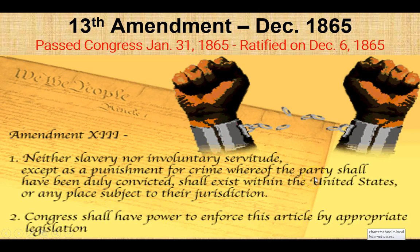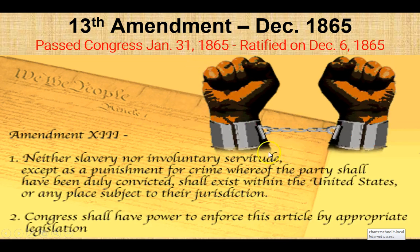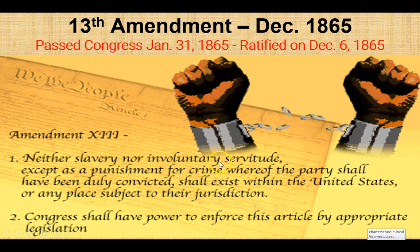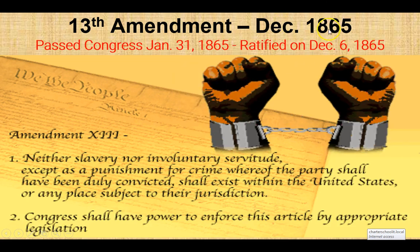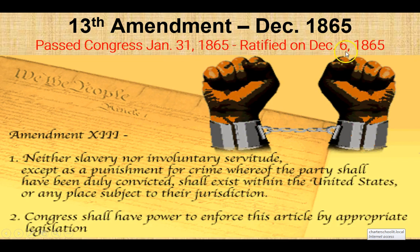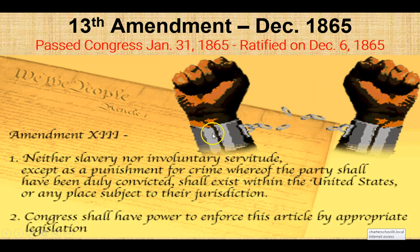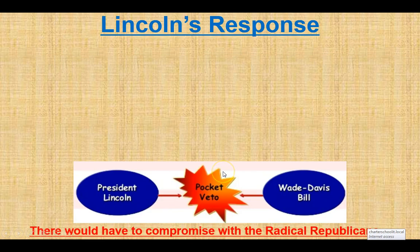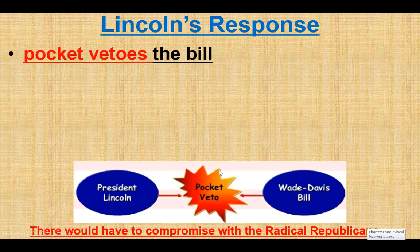In 1865, the 13th Amendment passed Congress on January 31st, 1865, and was ratified December 6th, 1865: neither slavery nor involuntary servitude, except as a punishment for a crime. If you were convicted of a crime, you could be put into servitude — an interesting point for a future lesson. Slavery is gone for the most part, unless you're arrested for a crime. That is key.